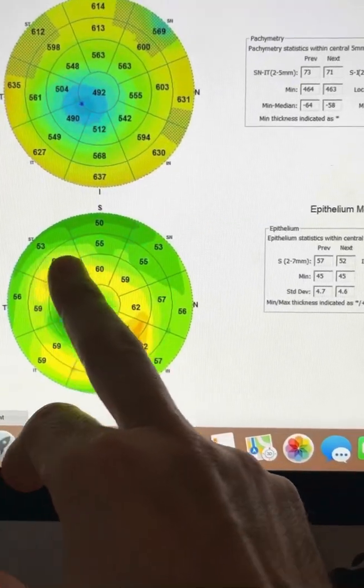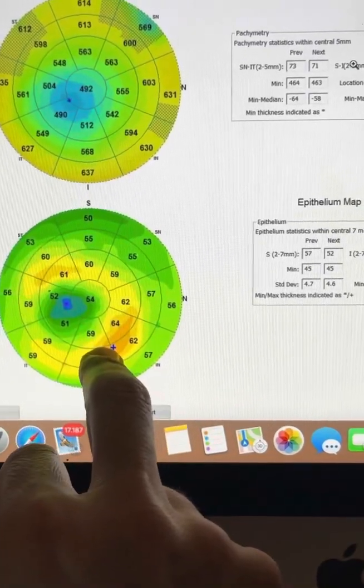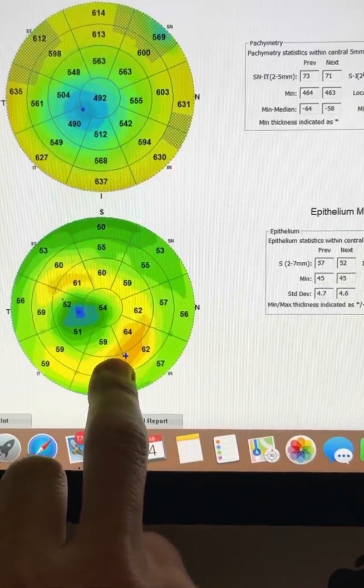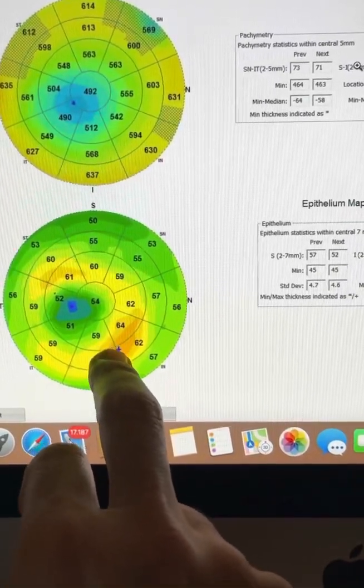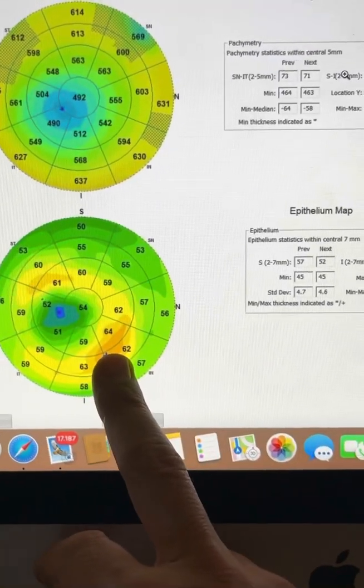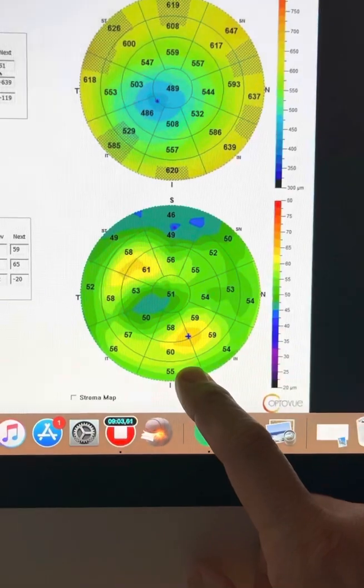And also, the epithelium around the cone has become significantly thicker with the thickest epithelium measurement at 65 microns here and here to try and cover up the cone. The same measurements today look a much milder epithelial response.